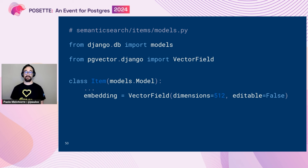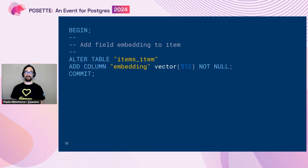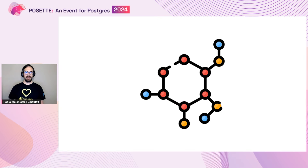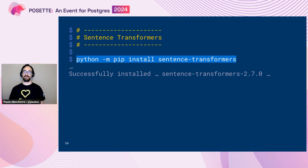At this point, we can start using the VectorField to store all our embeddings. As you can see, we define the number of dimensions and declare it as not editable. Same as before, we create the migration and apply it — and we can see the SQL: it alters the table and adds an embedding column with a specific dimension and not nullable. Now, to transform our text into vectors, we need to access an embedding model. We decided to use a sentence transformer. You can install it easily from pip, but it requires a lot of dependencies. It may take seconds or minutes to install, but at the end you'll have everything you need to transform your content into embeddings.